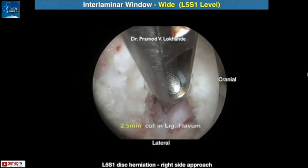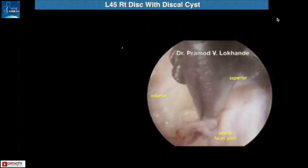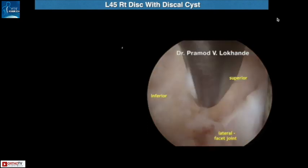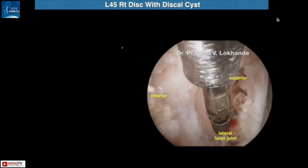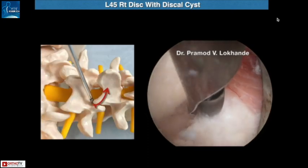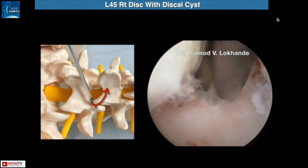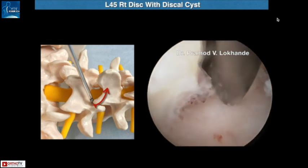The hole in the ligamentum flavum is very small. Now consider the second scenario of a narrow interlaminar window — for example, an L4-5 right-sided up-migrated disc herniation with a large herniation. Here the medial part of the facet joint is removed. This begins with identifying the tip of the descending facet; drilling is started at the tip of the descending facet and continued upwards towards the upper lamina. This is drilling of the ascending facet.